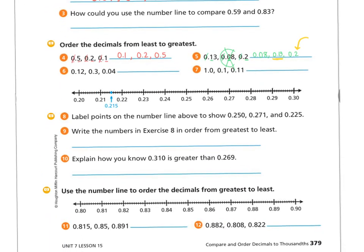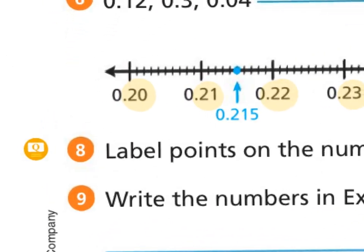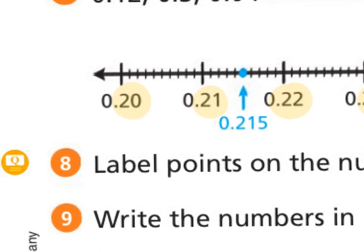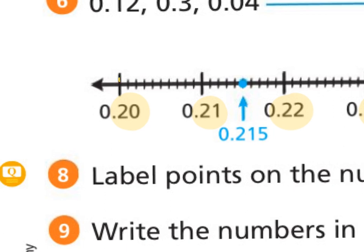Number eight says label the points on the number line above that show 250 thousandths, 271 thousandths, and 225 thousandths. Notice now instead of tenths as our markers, they're giving us hundredths — 20, 21, 22, 23, all the way up to 30. That means between 20 and 21 I'm going to start counting in thousandths: 0 and 201, 0 and 202, 0 and 203, and I'd keep going all the way through 209 before moving to 210 thousandths.